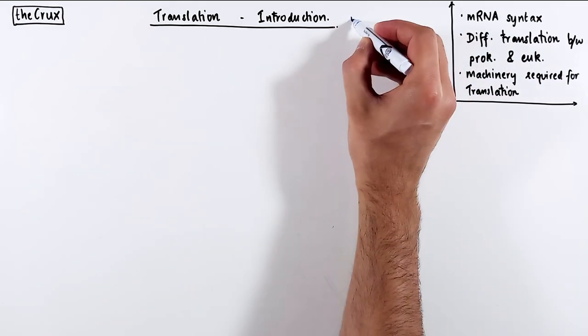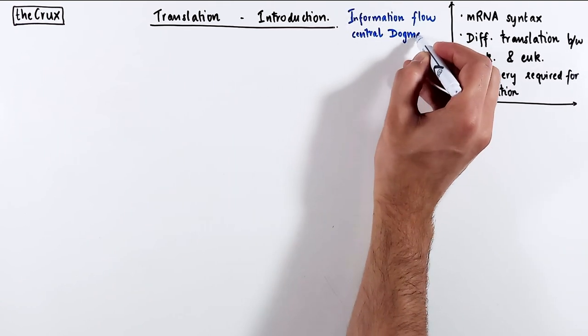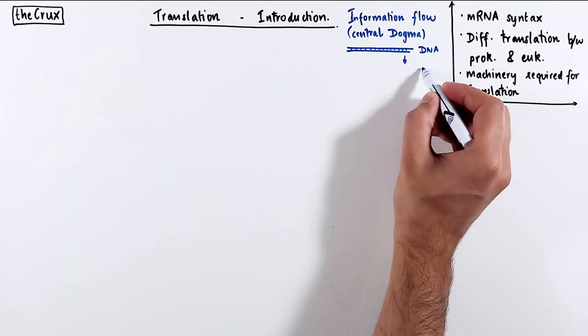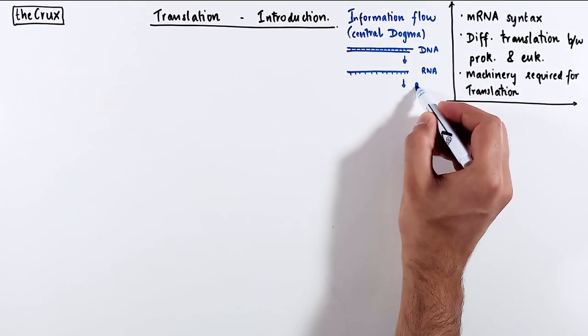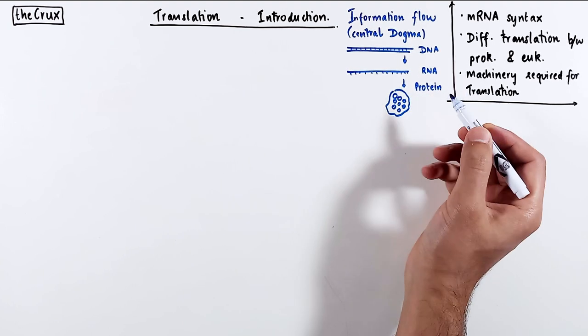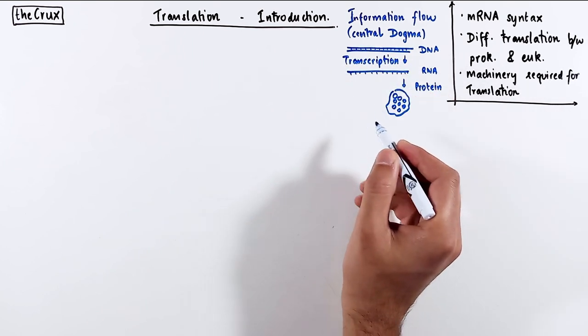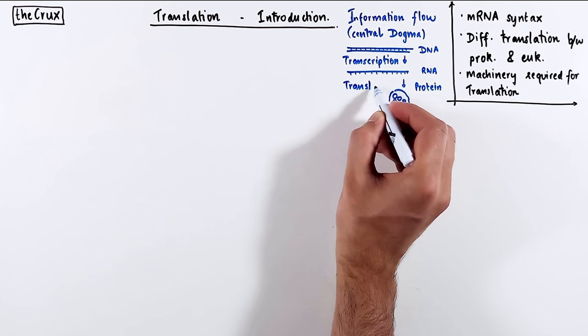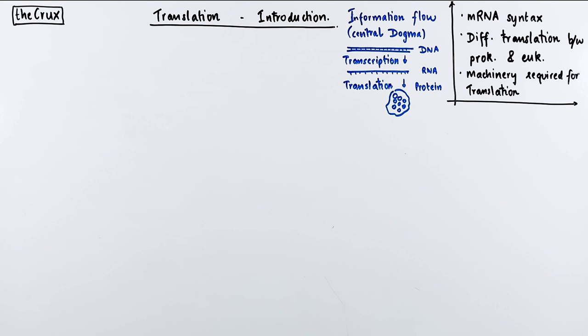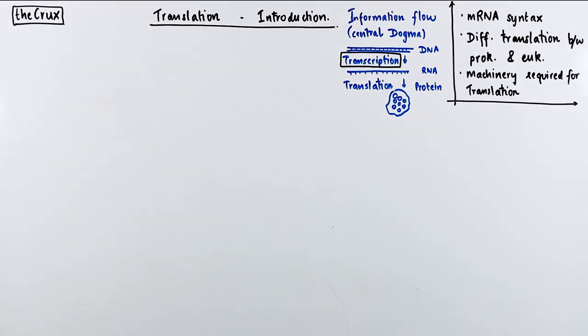To put you on the same starting point, if we look at the information flow in cells, which you may have heard as part of the central dogma, the information in the double-stranded DNA is converted into RNA, and the information from the RNA is converted into proteins. The transmission from DNA to RNA occurs in the process of transcription, and the conversion of the information from RNA to protein occurs during translation. If you're interested in transcription, I have a series of videos and a playlist on transcription, and you can find links to them down in the description.